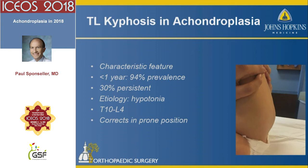Thoracolumbar kyphosis in achondroplasia is characteristic. Almost 90% of patients in the first year of life have this hypotonic thoracolumbar kyphosis, but they tend to grow out of it. The etiology is delayed muscle control and delayed extensor mechanism function, so they sag, and some get growth inhibition by the Hueter-Volkmann law, but most can grow out of it if they develop their milestones in relatively good order.